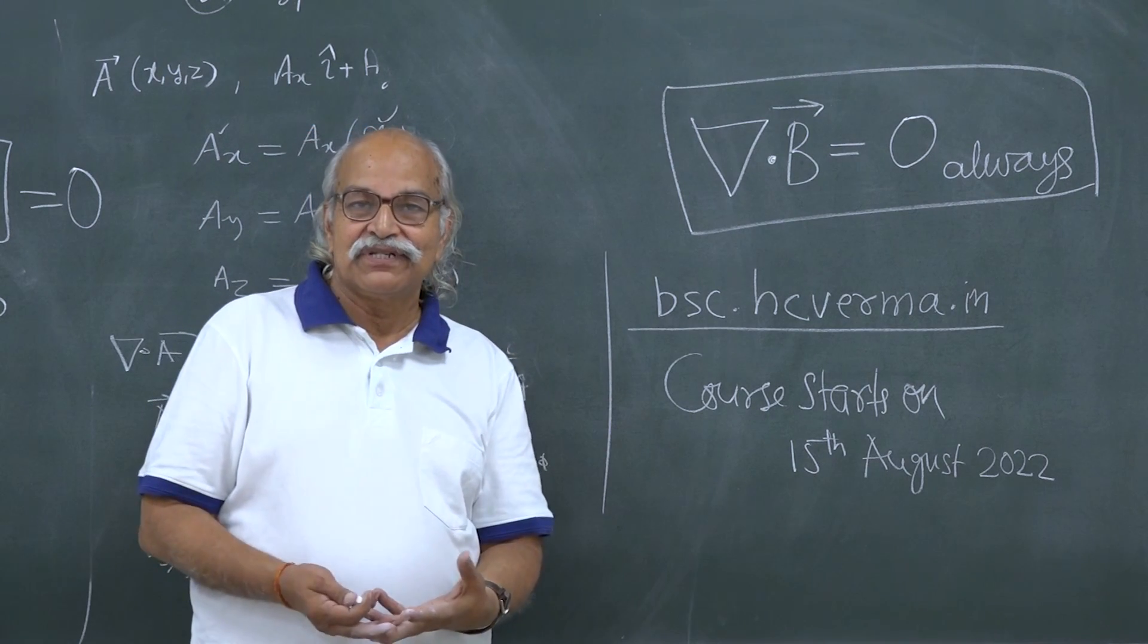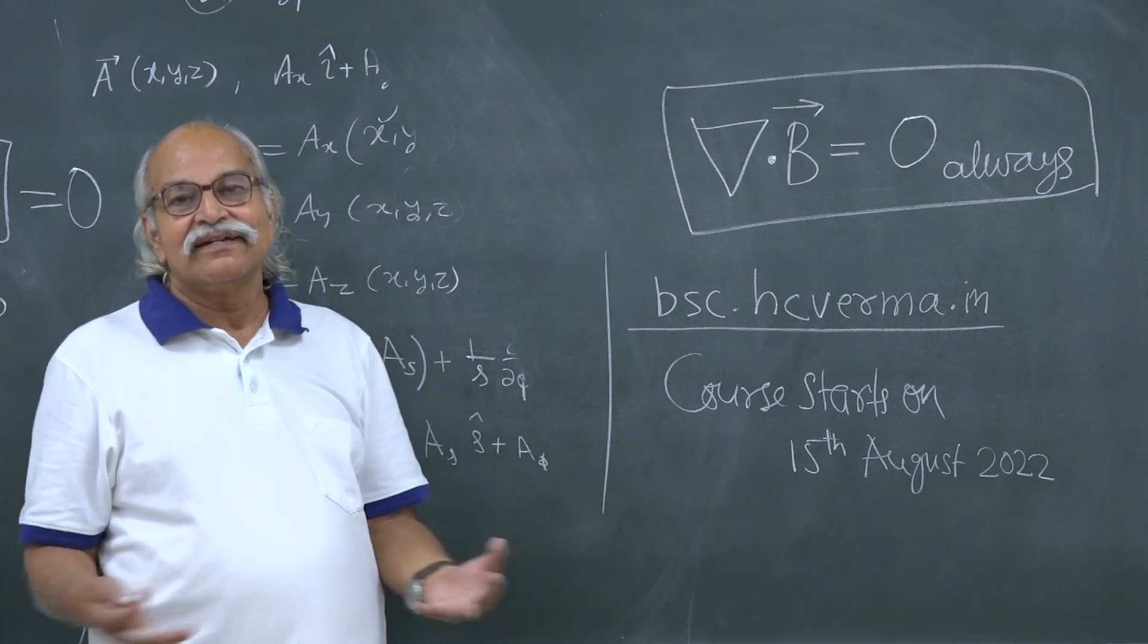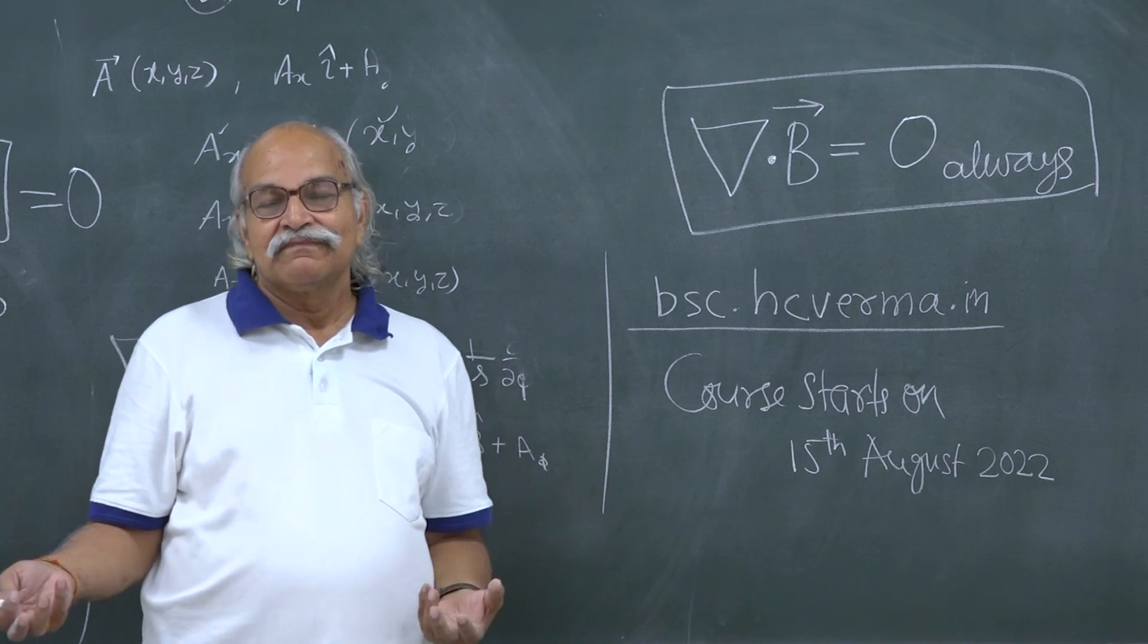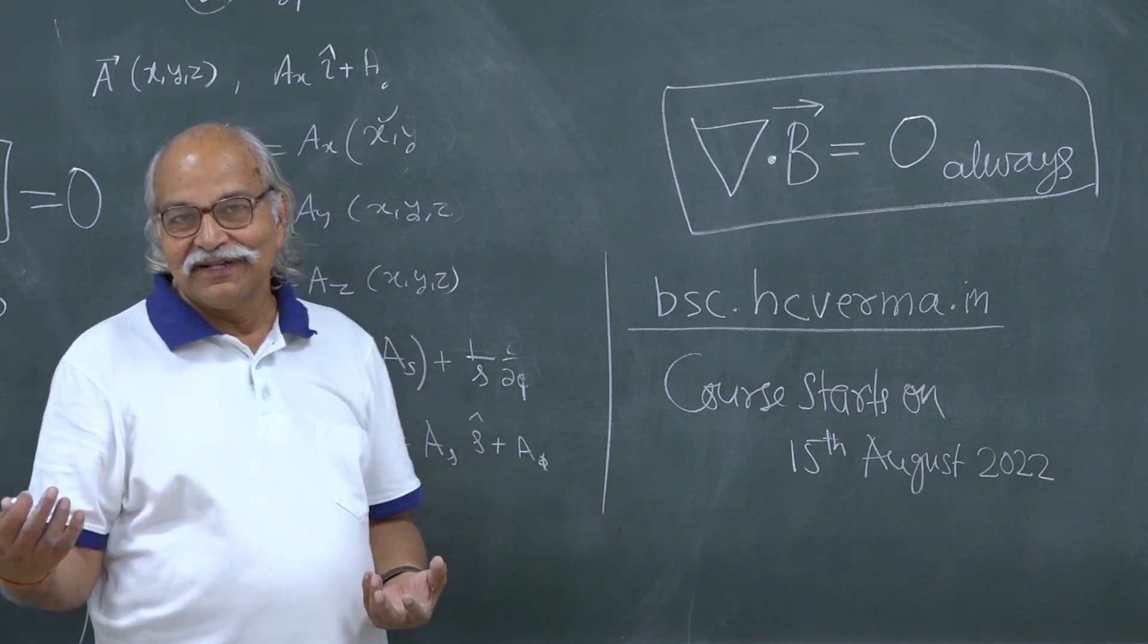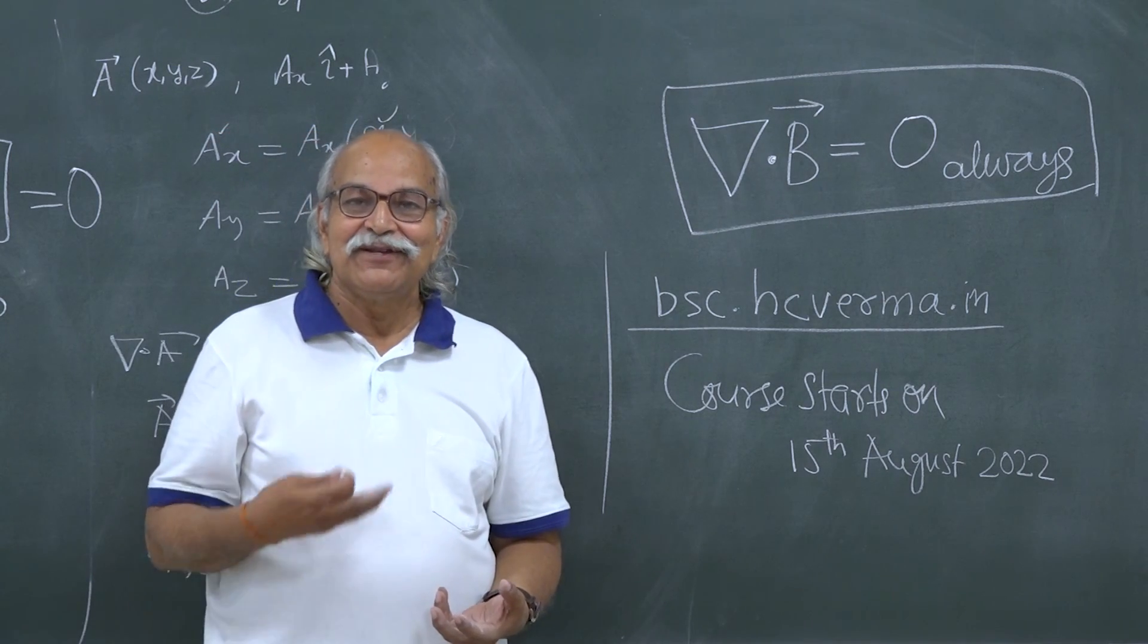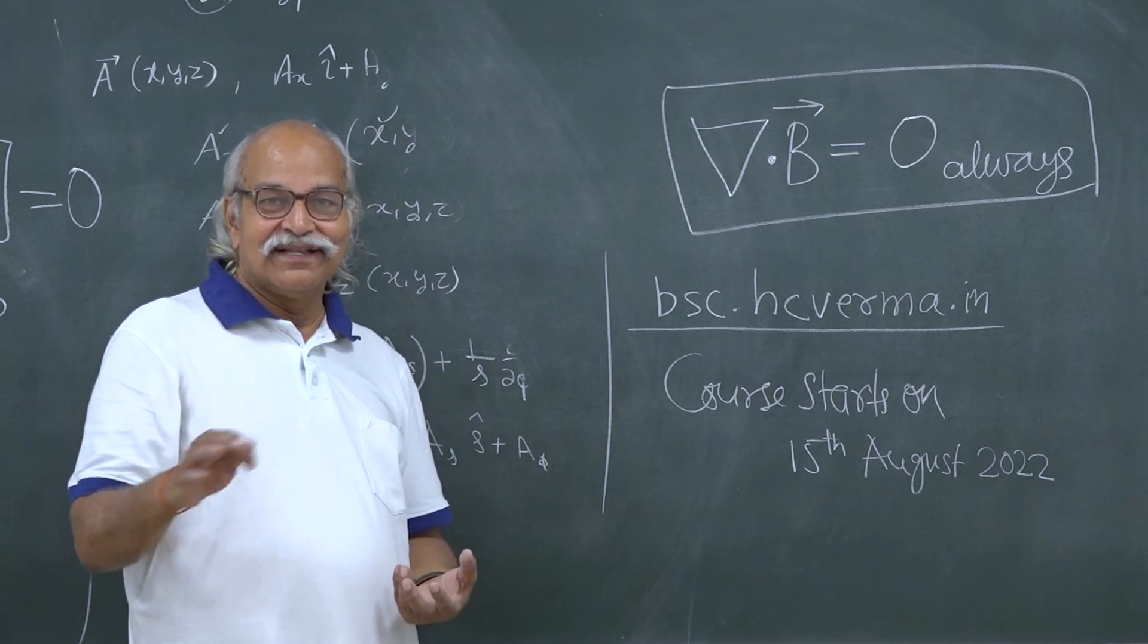Nevertheless some mathematical background will be needed and we will cover basically the different kinds of current distributions which can produce magnetic field. And then if the magnetic field is there how a charged particle will move in that. You know from high school that if it is a uniform magnetic field and you project a charged particle perpendicular to the field it goes in a circle.